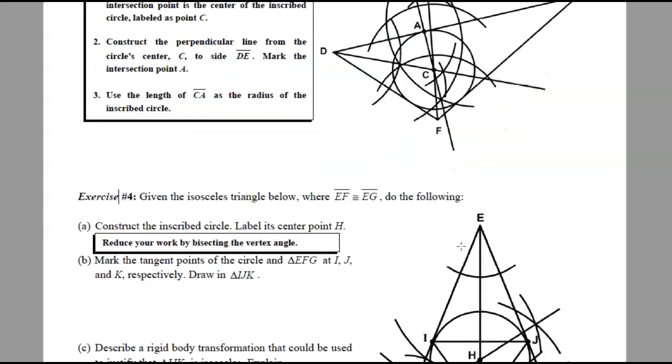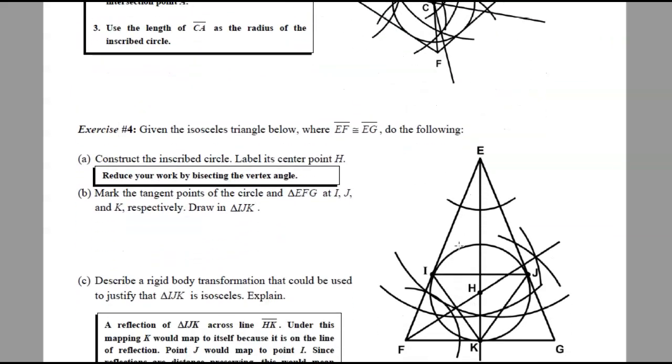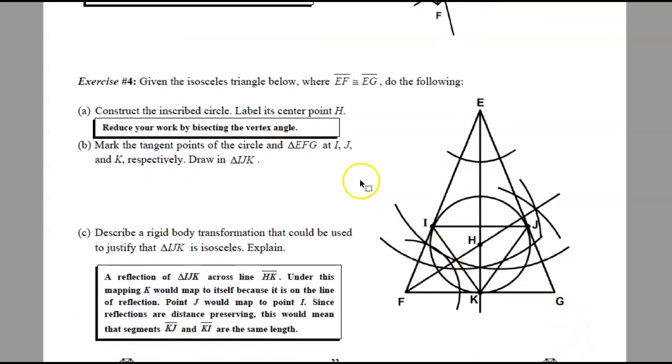All right, last exercise, and I'll try to keep this one quick. Given the isosceles triangle below with EF and EG equal, do the following. Okay, first construct the inscribed circle and label its center point H. So we can bisect any two angles to form the inscribed circle center.